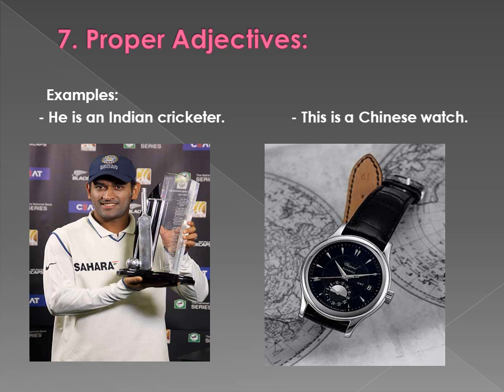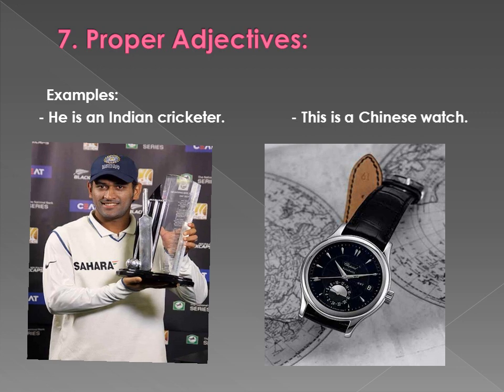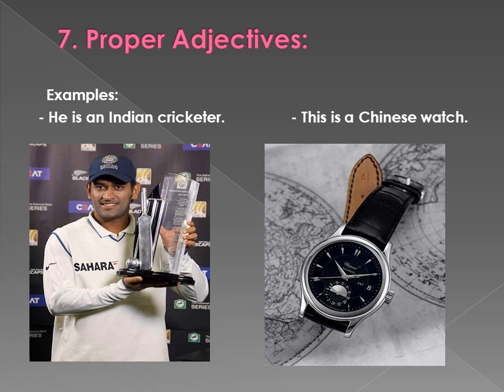Next type of adjectives are proper adjectives. Proper adjectives are made by converting a proper noun into an adjective. For example: 'He is an Indian cricketer.' Indian is made from India, which is a proper noun — so Indian is a proper adjective. 'This is a Chinese watch.' Chinese comes from China, which is a proper noun — so Chinese is a proper adjective.